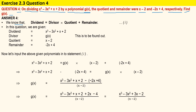We know that the dividend is equal to divisor times quotient plus remainder. In this question we are given the dividend to be x³ - 3x² + x + 2. The divisor is g(x), which is to be found out. The quotient is x - 2 and the remainder is -2x + 4.